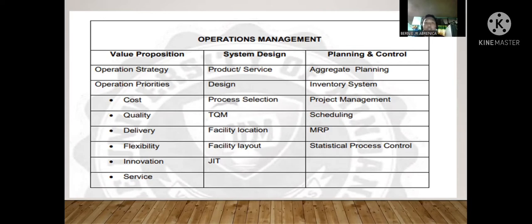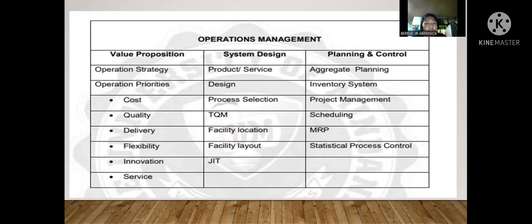We have the operation strategy and operation priorities, which are cost, quality, delivery, flexibility, innovation, and service. We also have system design, which provides sufficient detailed data and information about the system and its elements. Under system design, we have product and service design, process selection, CQM, facility location, facility layout, and JIT.